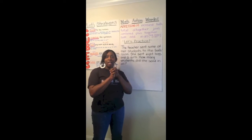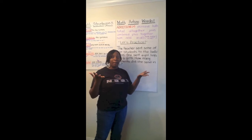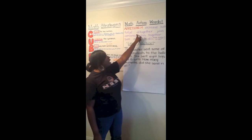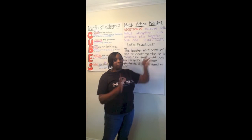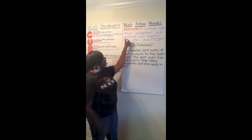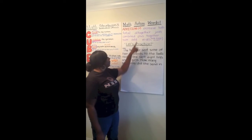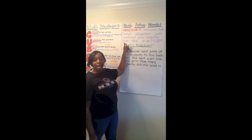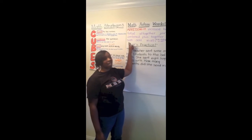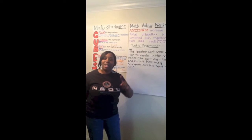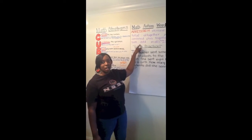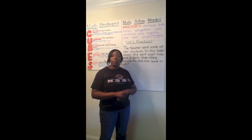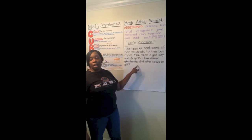More addition action words: join, combined, plus, together, sum, add, in all, and how many in all. Increase means how many did we go up — you put numbers together to see how much more you have. Both means you're taking two numbers to figure out the answer. Total means putting them together. Join means to put together, so you're adding. Sum is a key word — it is the answer to an addition problem. If you see the word sum, you know you have to add.